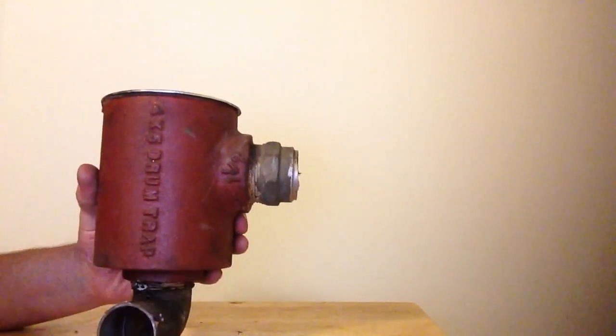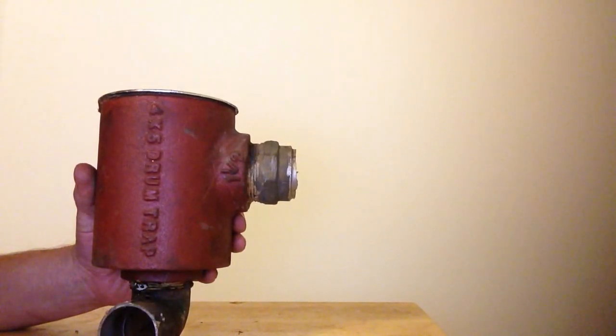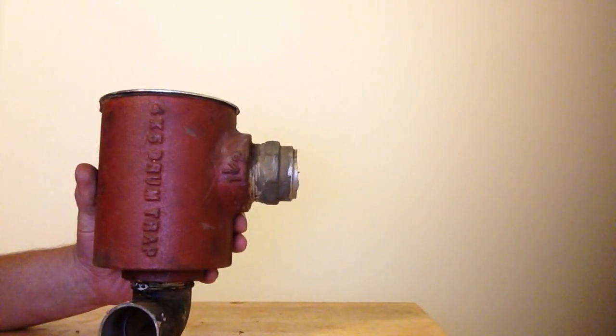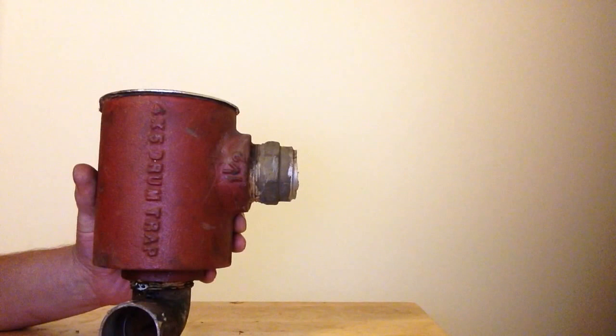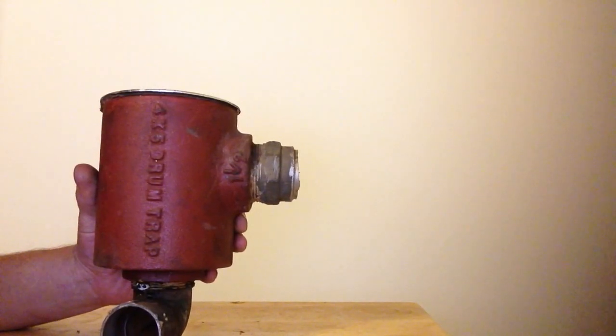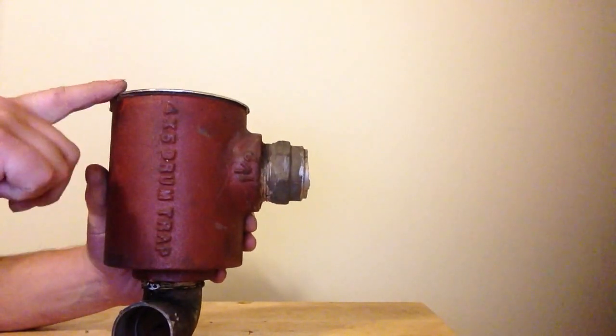You'll find these behind your access doors for your tub. And if you have a clawfoot tub, sometimes it will actually be in the floor with just the lid showing.